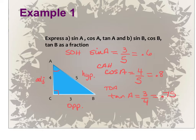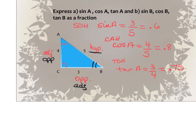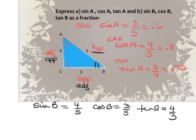Now I need to go back and rename the sides using angle B. If I give the names based off angle B, this side now becomes opposite, this one is now the adjacent, but the hypotenuse stays the hypotenuse. So sine of B is opposite over hypotenuse: 4 over 5. Cosine of B is adjacent over hypotenuse: 3 over 5. And tangent is opposite over adjacent: 4 over 3. The decimal values would be 0.8, 0.6, and 1.3 repeating — or 1.3333 to four decimal places.